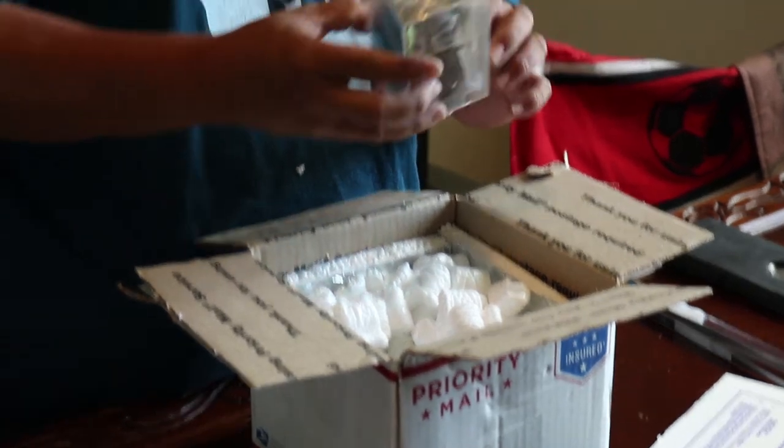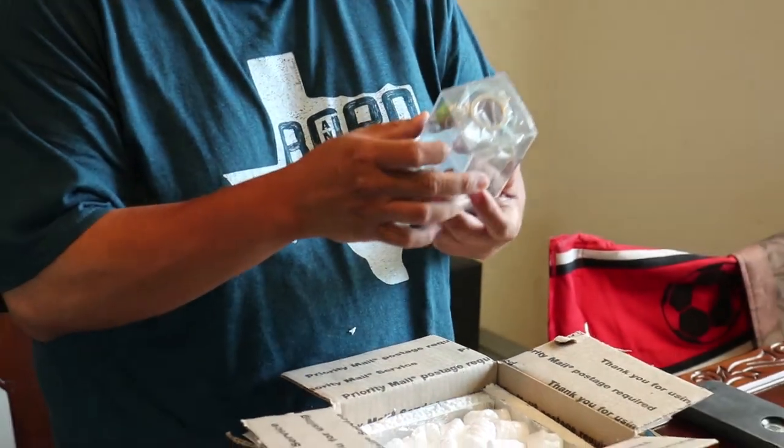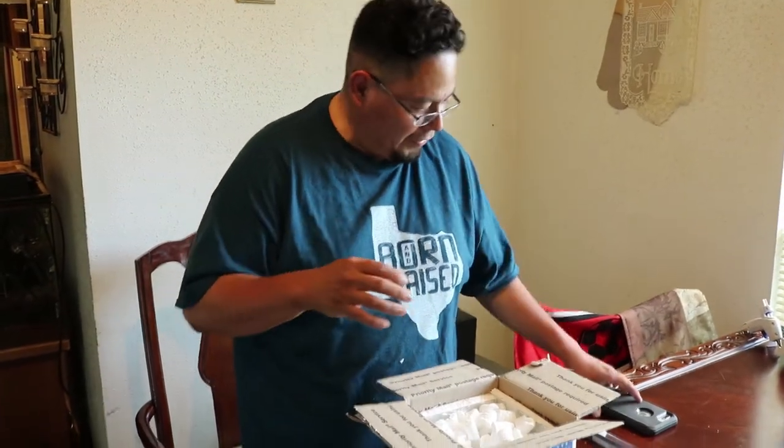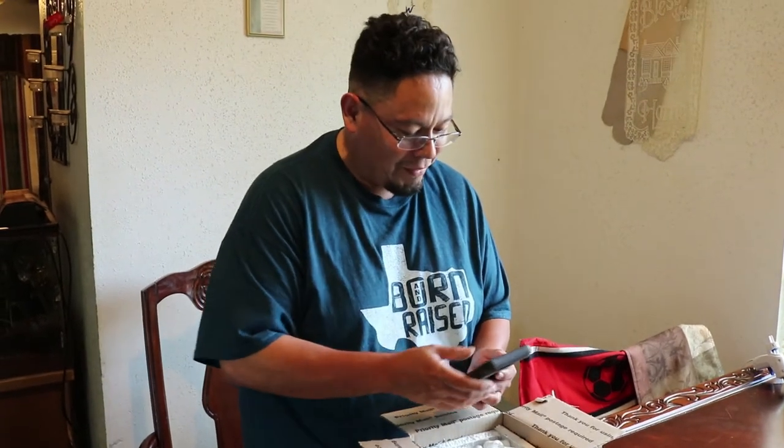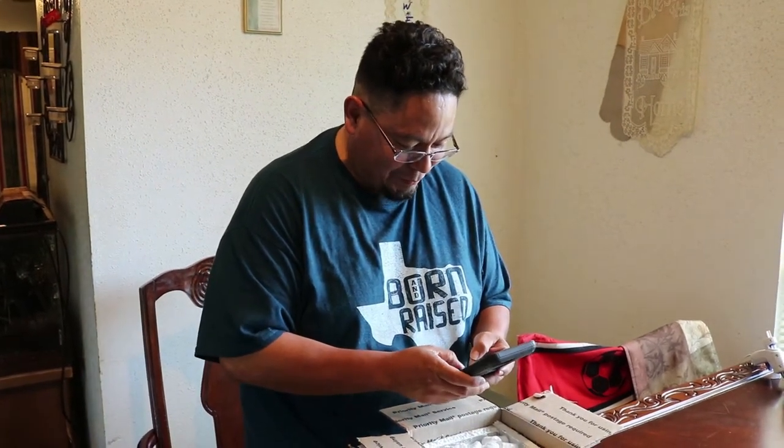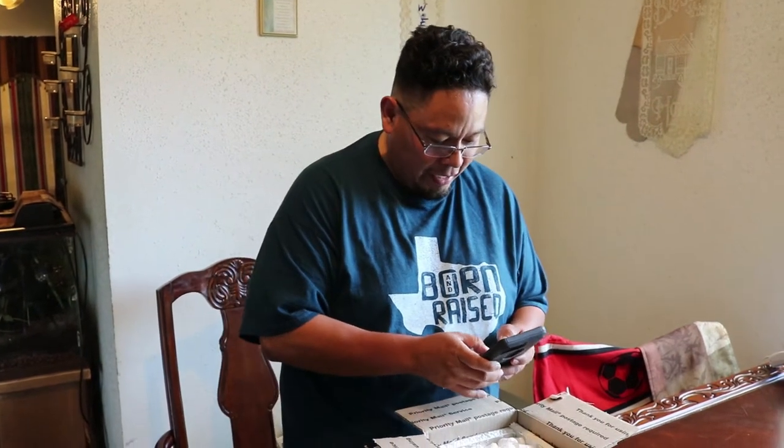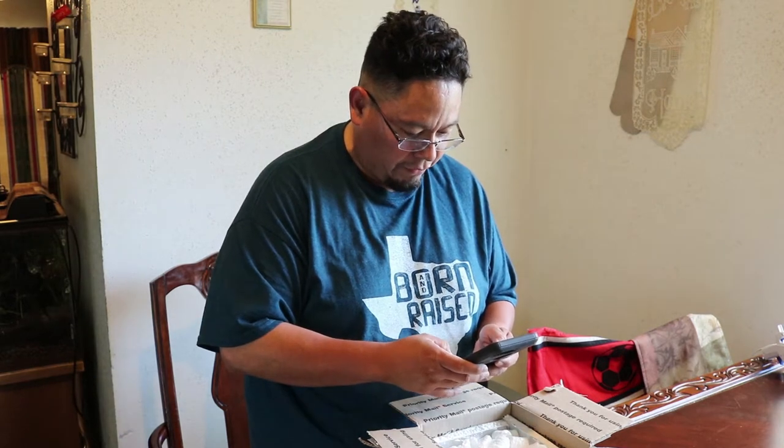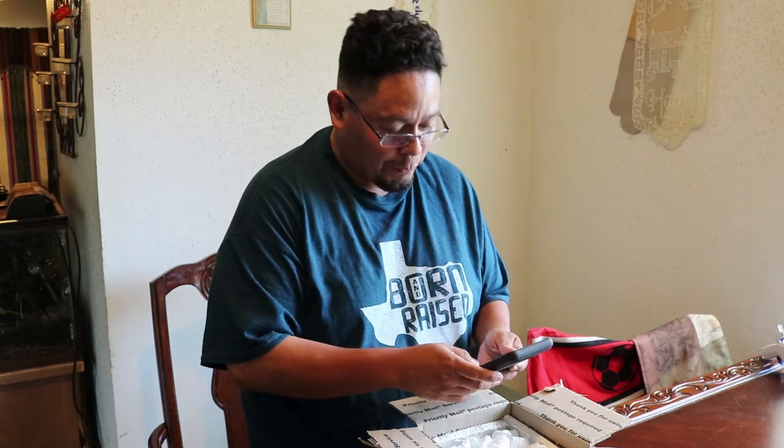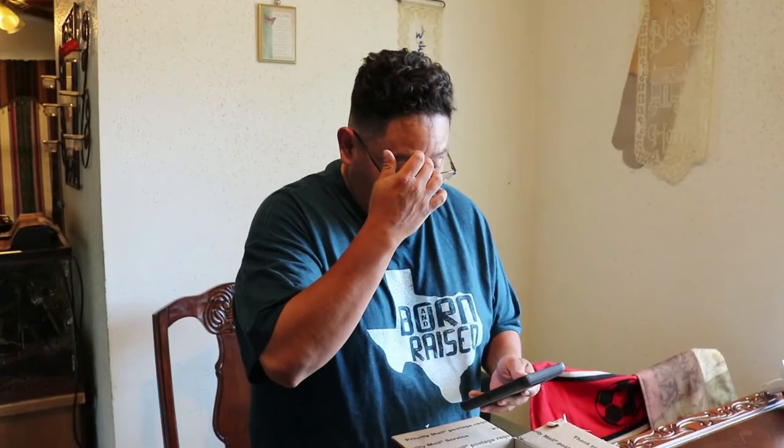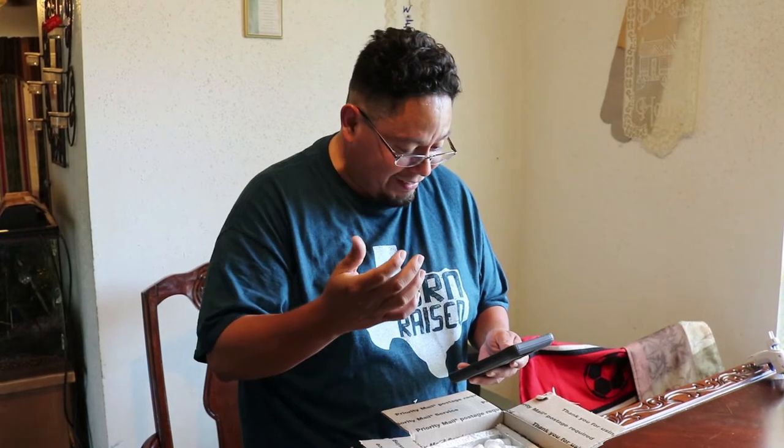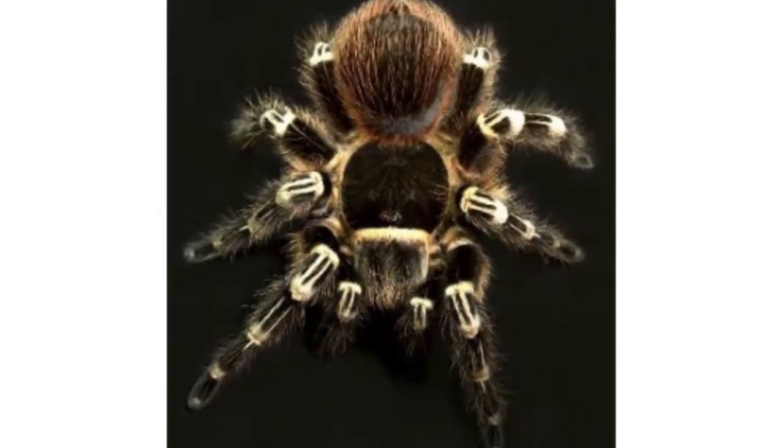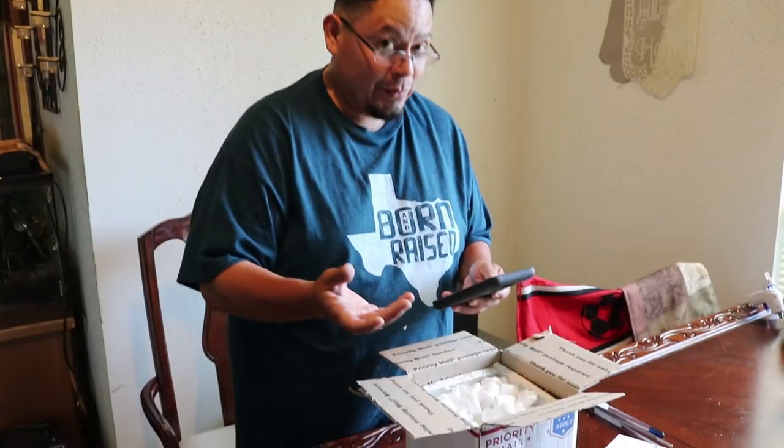This is the enclosure for the little sling that we're getting today. Y'all are going to kill me because I don't remember the name, the scientific name, but I'm going to look it up real quick. Okay, so what I ordered is the Acanthoscuria genicolata. Which is the Brazilian giant white knee tarantula. So that's what I ordered.